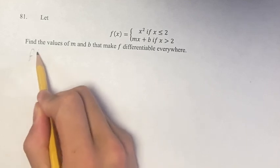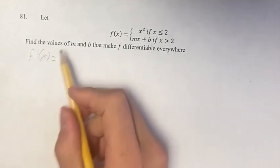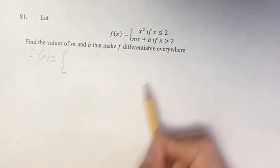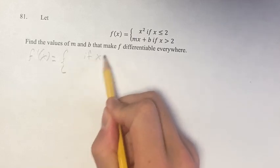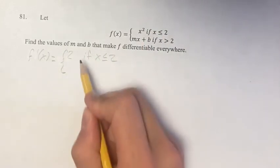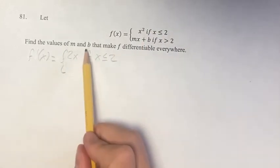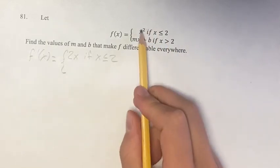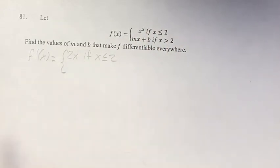So first, finding the derivative. The derivative, if x is less than or equal to 2, is the derivative of this function, which is the power function. We just bring down the exponent, and our new exponent is going to be the old one minus 1, which is 2 minus 1, which is just x to the first power, which is just x.